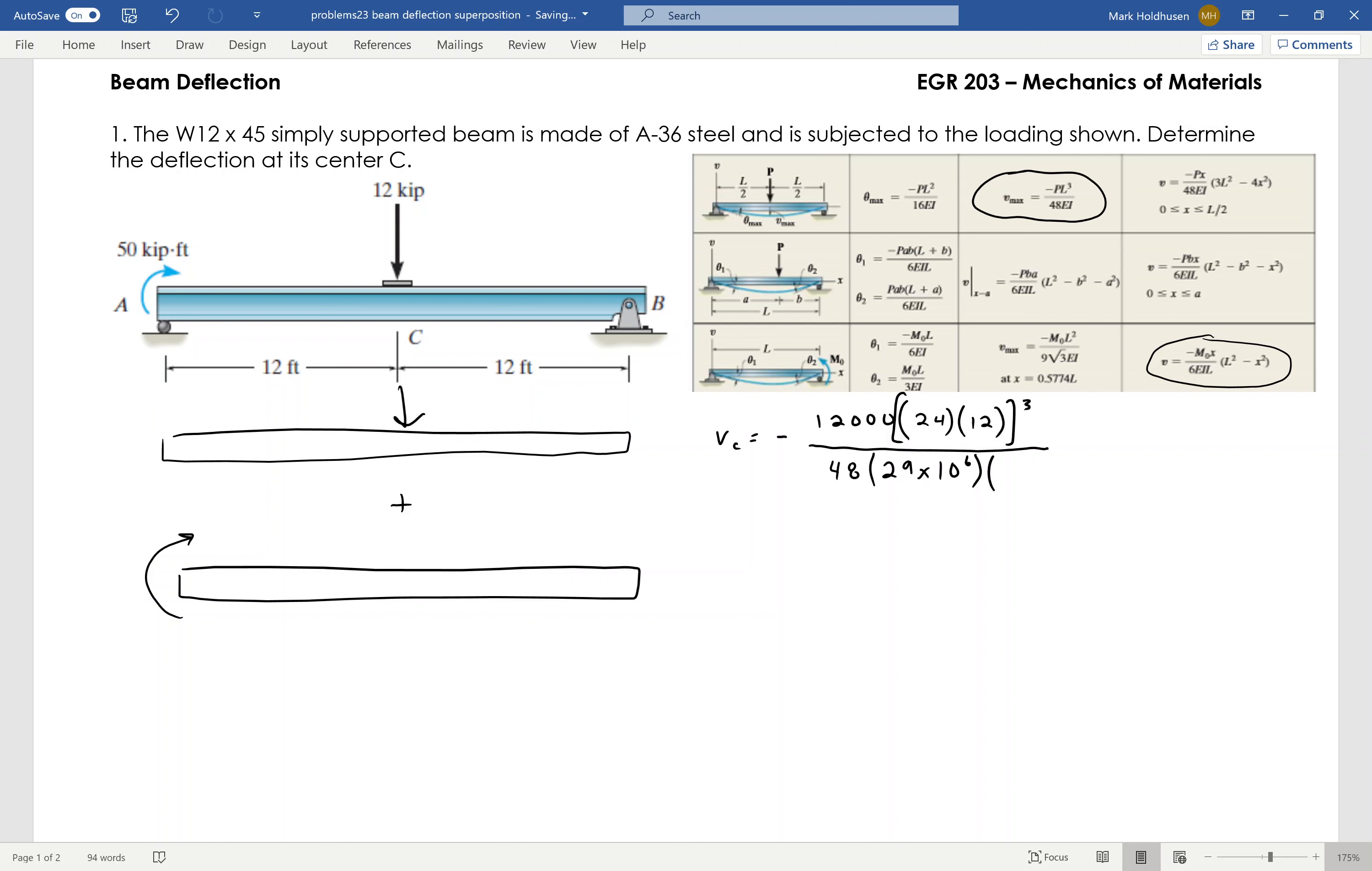And then you can actually look up I for the W12x45 steel, and for that I get 350. That would be inches to the 4th. So from that, the deflection just due to the 12,000 pounds is negative 0.588 inches.